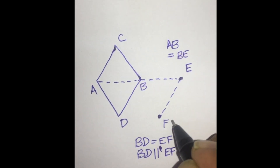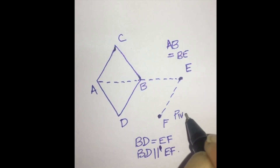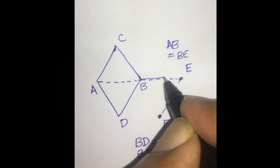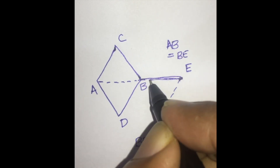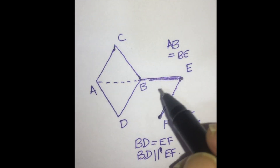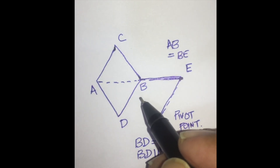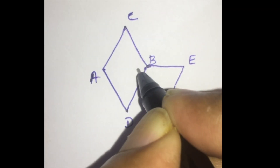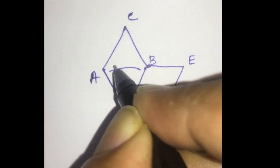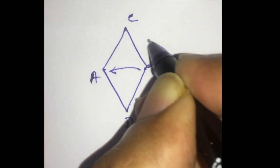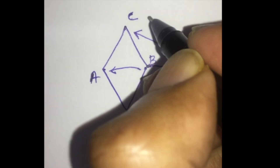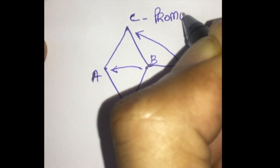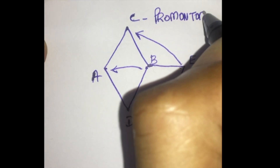Point F is the pivot point of the rhomboid flap. The line D-B-E-F forms the flap that is marked to cover the rhomboid defect A-B-C-D. The flap represented by point B moves to point A, and point E moves to point C. Point C is the maximum tension of the flap and is called the promontory of the flap.